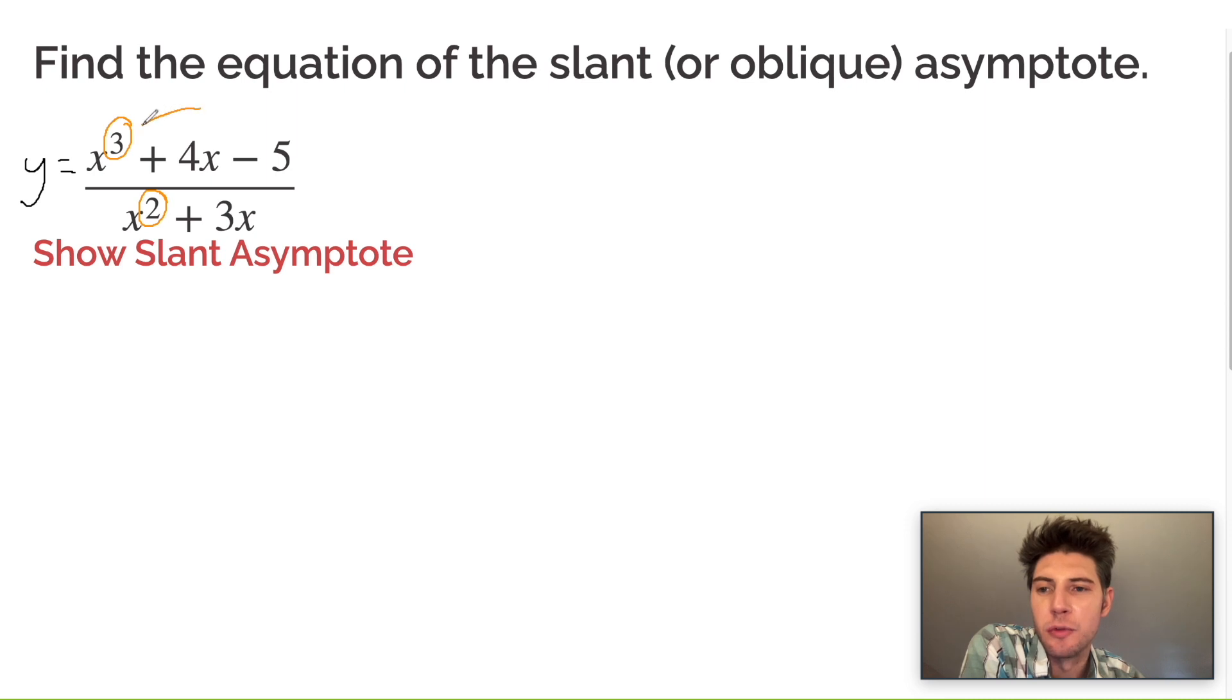And since it's greater by one, since the degree is only greater by one, it is going to be a linear slant asymptote.